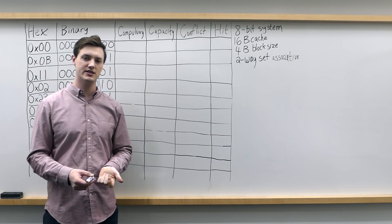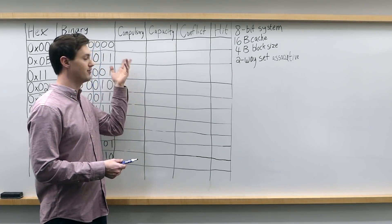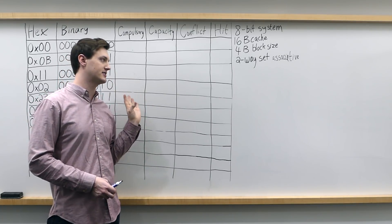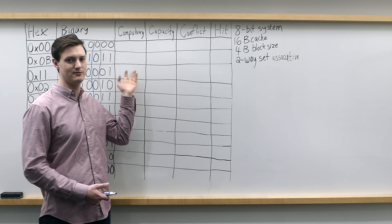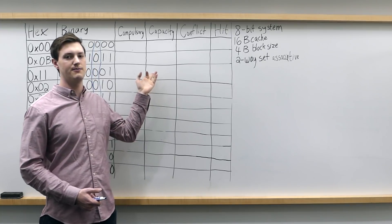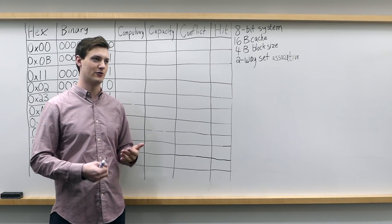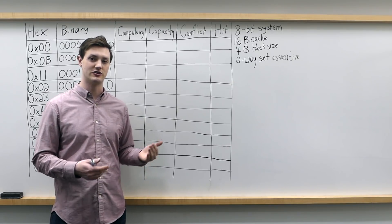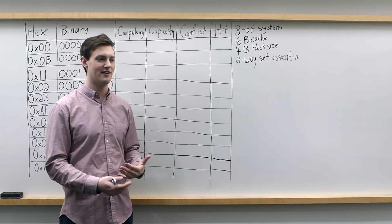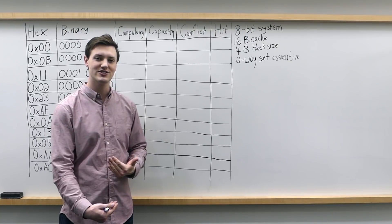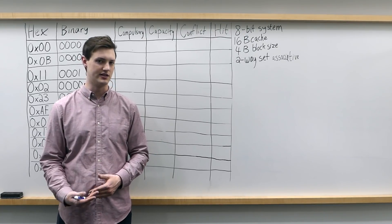First we have compulsory misses. These occur when you're first loading the cache — you have to add the tags to the cache for the first time at some point, so these are sort of like the first misses that you incur. Next, capacity misses occur because your cache is too small and wouldn't have otherwise occurred if you had a larger cache. And finally, conflict misses are misses that you have because of everything else, which usually happens because of the set associativity of your cache.